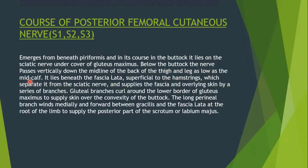The nerve runs as low as the mid calf. At the region of the back of the knee it will pierce the roof of the popliteal fossa and run along between the two heads of the gastrocnemius muscle along with the small saphenous vein. It lies beneath the fascia lata, superficial to the hamstrings, separated from the sciatic nerve. The sciatic nerve lies deep to the long head of biceps femoris, but the posterior femoral cutaneous nerve lies superficial to it.